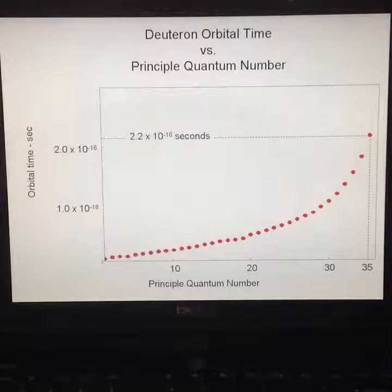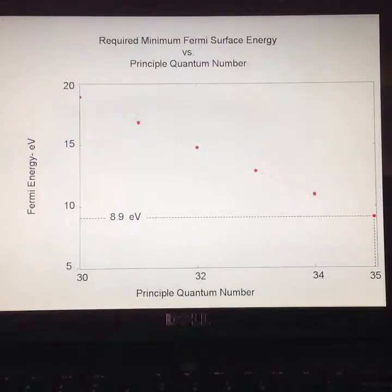Now recall from a previous video the graph of deuteron orbital time, tb minus tA, versus the principal quantum number. If we calculate the Fermi energy required in each state, we get the next graph shown for states n equals 30 through 35, with Fermi energies below 20 eV. Palladium hydride has a Fermi energy of about 12 eV. We calculate a minimum Fermi energy of about 8.9 eV for the n equals 35 state.